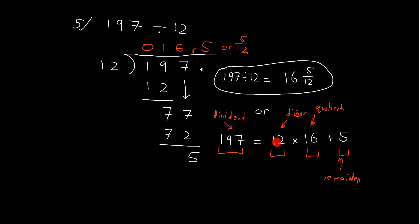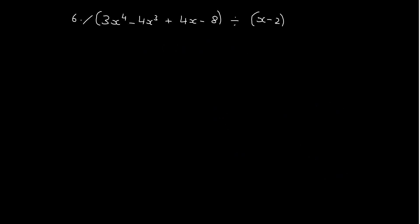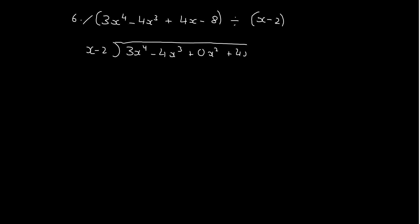Before you start and before you pause your video, I'm just going to give you one little hint. So we know we're dividing x minus 2 into 3x to the 4 minus 4x cubed plus 0x squared plus 4x minus 8. The little trick is: see how there's no x squared here — put one in as 0x squared. Otherwise all your work will run together and you'll get things in the wrong column. So now pause the video and see if you can solve it.